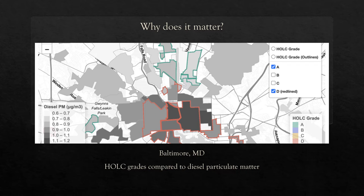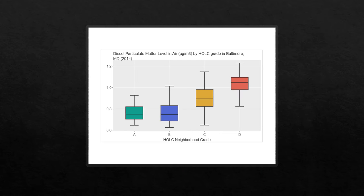Why does it matter? This map shows the neighborhoods defined by the Homeowners Loan Corporation as compared to the diesel particulate matter in the air across Baltimore, Maryland. People living in A-rated neighborhoods experience almost no exposure, while people in D-rated neighborhoods have the highest exposure to diesel particulate matter, leading to negative health impacts. This plot chart from the same source clearly illustrates the link between neighborhood classification and health risk from diesel particulates.